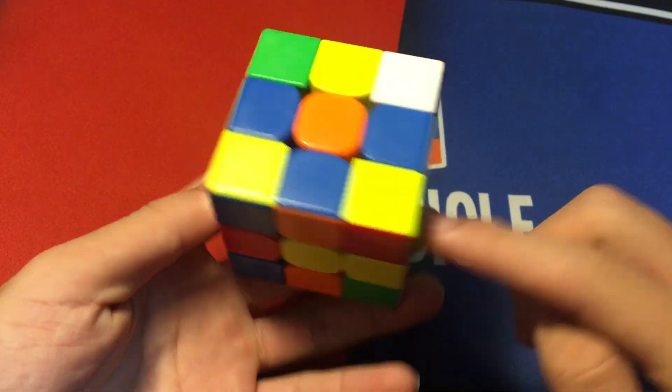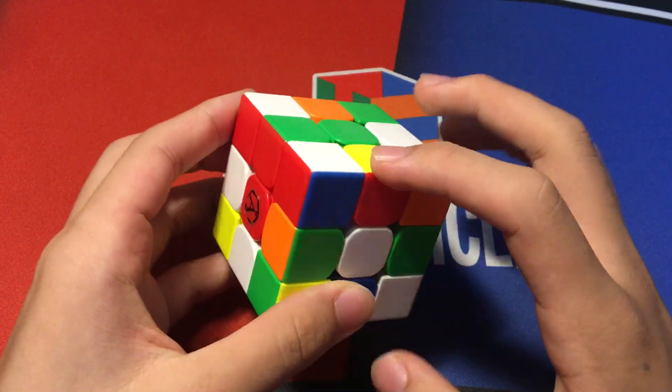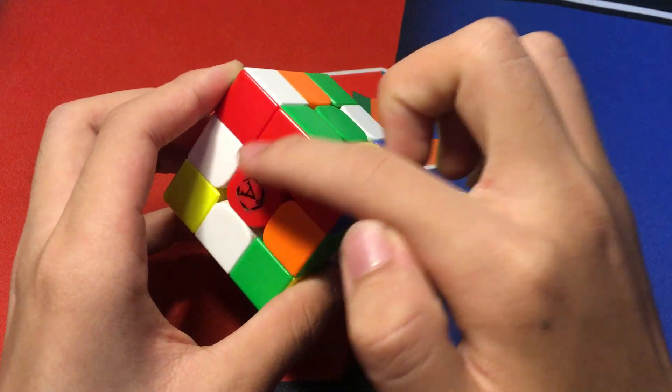So, its cross pieces are here, here, here, and here on yellow. We also have a solved cross F2L edge here